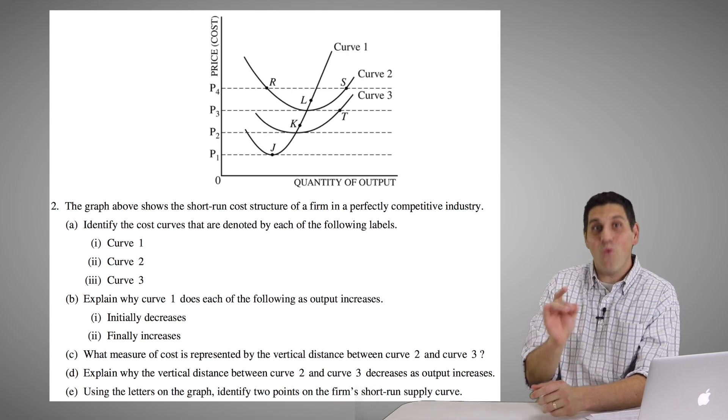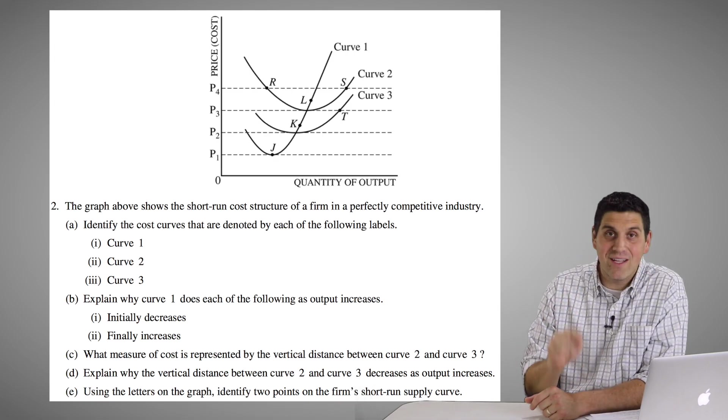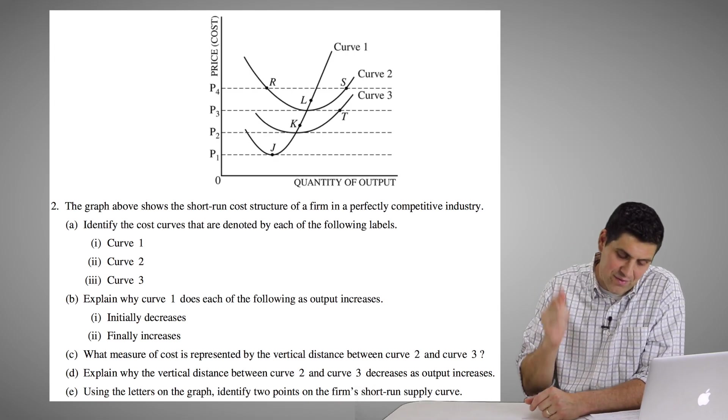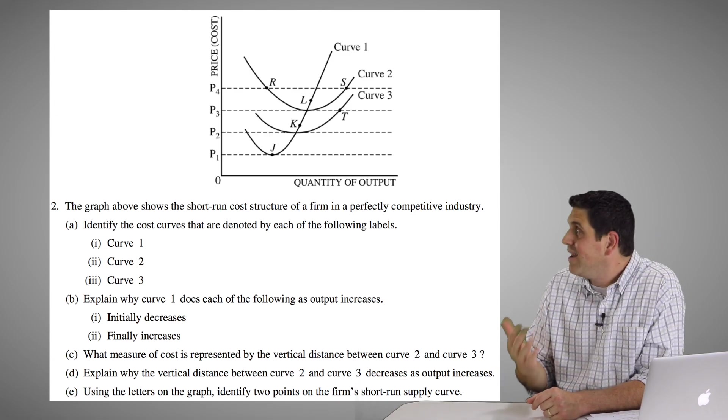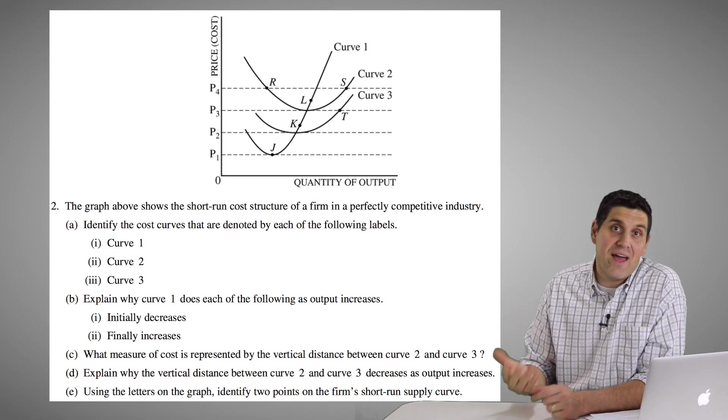So the marginal cost above average variable cost is the short run supply curve. But that doesn't even answer the question. The question was, what are two points on that supply curve? Well, the answers are K and L. K and L are the only ones that are actually on that short run supply curve.